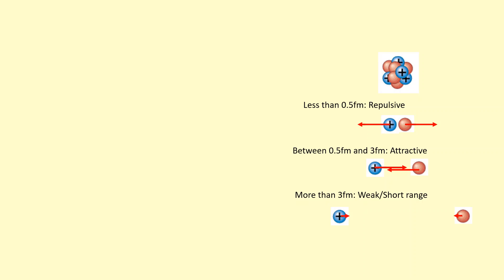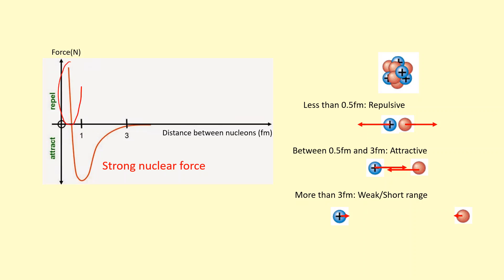Here's a graph showing how the strong nuclear force varies with distance. So as you can see here, less than 0.5 femtometers it's repulsive, and then between 0.5 and 3 is attractive. And then beyond that, 3 femtometers and higher, is just non-existent. Basically, it's just so weak that it's not there.